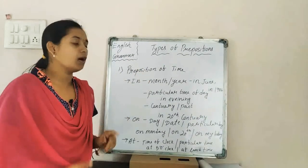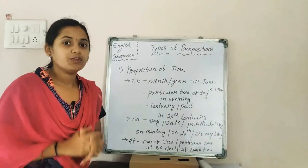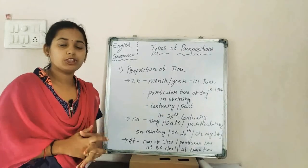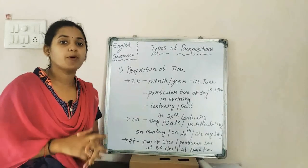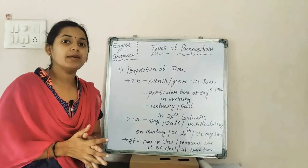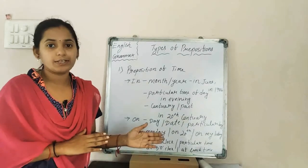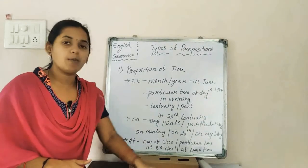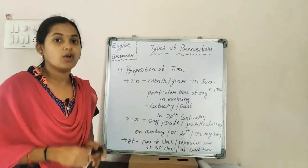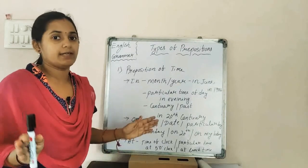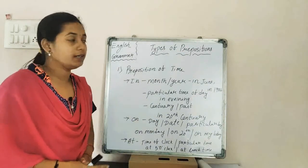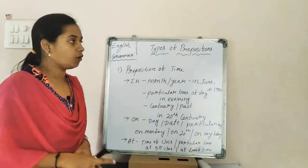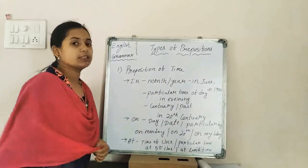According to that, prepositions are divided into three types. The first one is the preposition of time, which tells about the time. The second is preposition of place, which gives information about the place. The third is preposition of direction. Today we will discuss these types with examples.